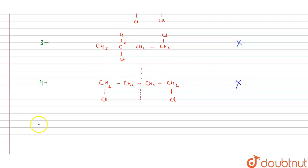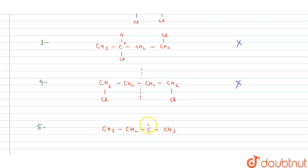The fifth isomer is a branched structure: CH3-CH2-CCl2-CH3, with two chlorines on the same carbon. There is no plane of symmetry and no two chiral centers present, so this isomer is also not a meso compound.